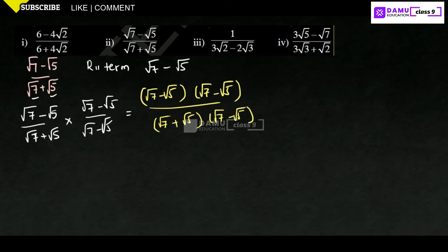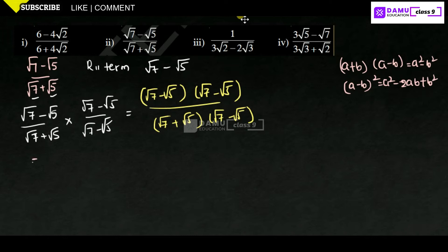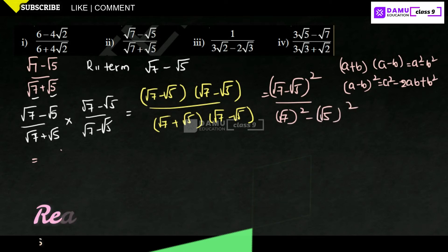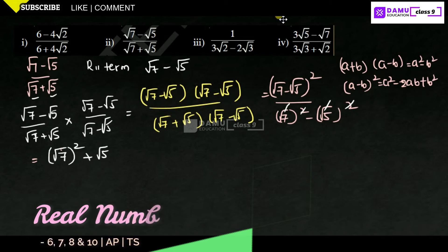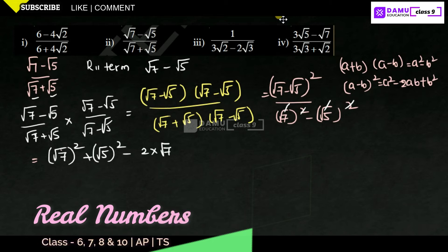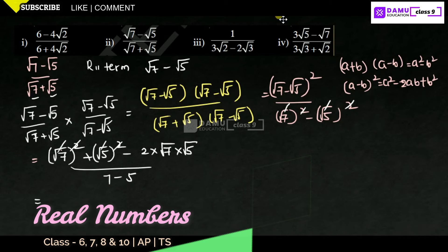The denominator is in the format (a plus b)(a minus b), giving a squared minus b squared, which is (root 7) squared minus (root 5) squared. The numerator is in the format (a minus b) whole square, giving a squared minus 2ab plus b squared. The square and square root cancel, so the numerator becomes (root 7) squared plus (root 5) squared minus 2 times root 7 times root 5, divided by 7 minus 5.